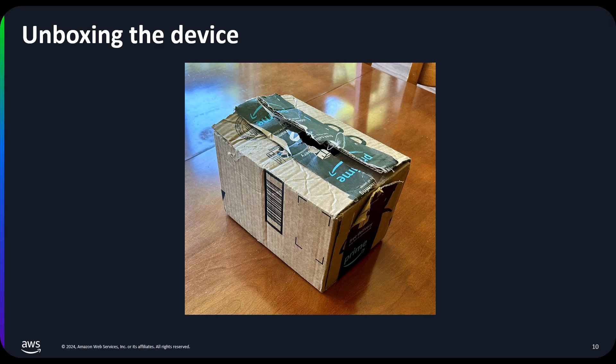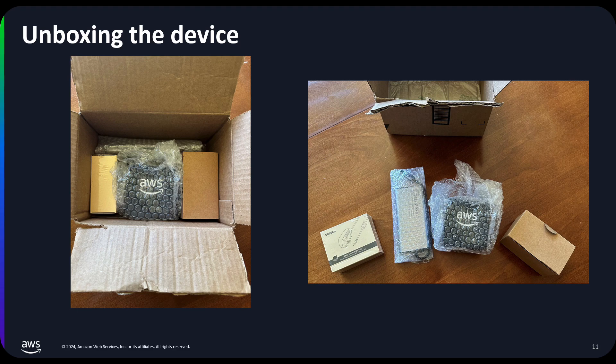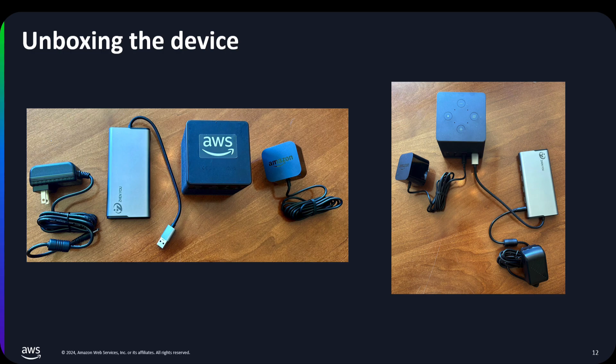Now let's walk through the delivery experience. The device arrives in an Amazon box that is about 5.5 inches tall, 6.5 inches wide, and 9 inches deep. Inside the box, pulling out the four components of the bundle, you see the device and the USB hub wrapped in bubble wrap, and the two power adapters that are boxed individually. The Amazon power adapter plugs into the Thin Client cube, while the USB hub plugs into the USB port of the cube. The USB power adapter then plugs into the back of the hub. It's worth noting that a keyboard and mouse are not included in the bundle; however, you can easily purchase these via Amazon.com.